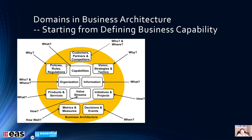Within BizBoK, in simple terms, there are four core domains in the middle. Two domains talk about the 'what': one is capability, which we will demo briefly today, and information is also one of the four core domains talking about the 'what'. Capability is what you are doing; information is what information you are generating. Within the core, there are also 'who' and 'where' talking about the organization, and the value stream talks about the 'how'. Around these, there are six surrounding domains covering 'why', like policy, rule, and regulation.